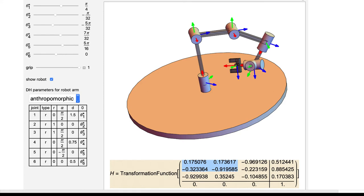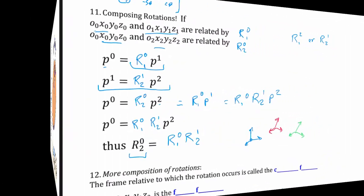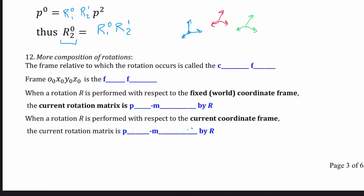So let's get ready and let's look at some examples of rotation transforms. So now let's talk about some rules when we have compositions of rotations. The frame relative to which the rotation occurs is called the current frame. What is the current frame that I'm in? And then I'm relative to the rotation. And then we're always going to remember that our zero frame is the fixed frame. So in a rotation, we can either apply this with respect to the fixed or the world coordinate frame or the current rotation matrix.